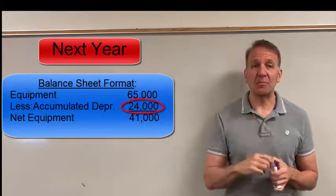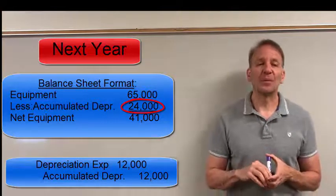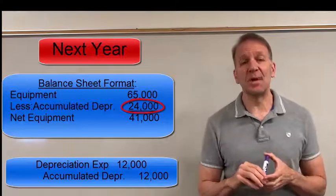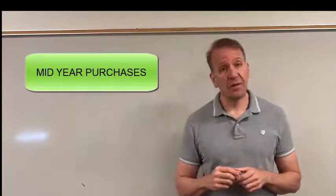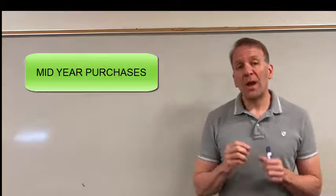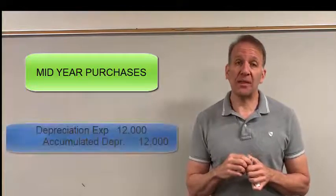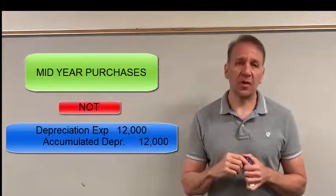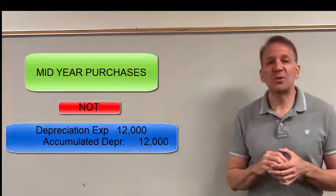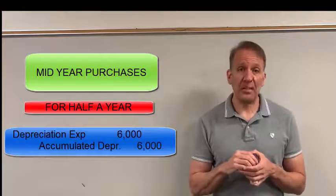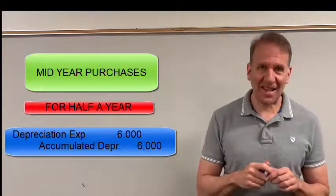Let's look at some additional information about mid-year purchases. We assumed in our first example that we purchased this asset on January 1st. But if we had purchased this instead on July 1st, then our adjusting journal entry at the end of the first year would not be for $12,000, because we only had the asset for half the year, for six months. So our journal entry would be for half of that amount, or $6,000. We would debit depreciation expense $6,000 and credit accumulated depreciation $6,000.